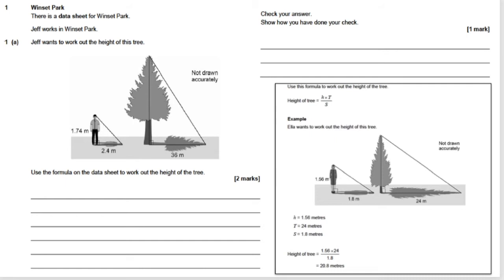Now H is the height of Jeff. T is the length of the shadow that the tree has made. And S is the length of the shadow of Jeff. Now they've given you an example here with someone else called Ella.